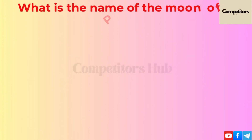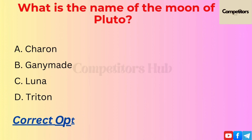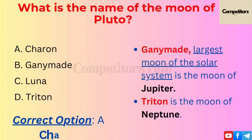The next question is: what is the name of the moon of Pluto? Option A: Charon. Option B: Ganymede. Option C: Luna. Option D: Triton. The correct option is A, Charon.